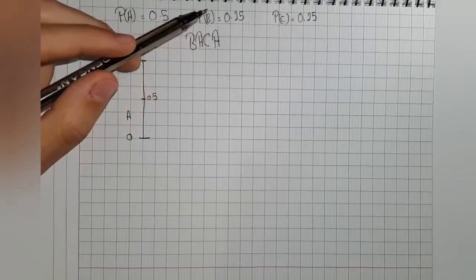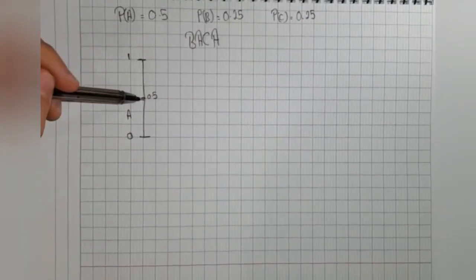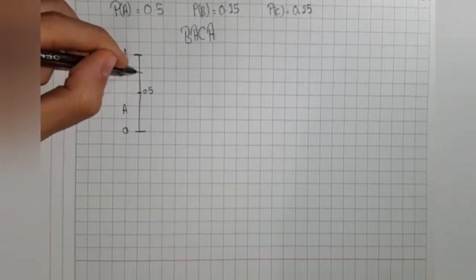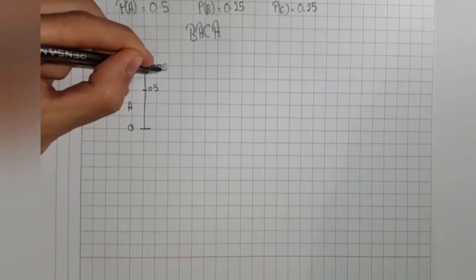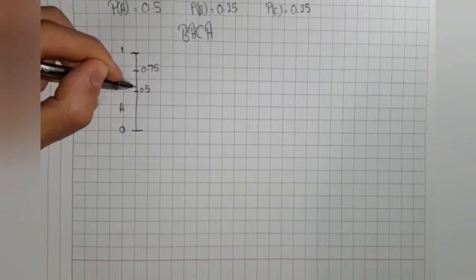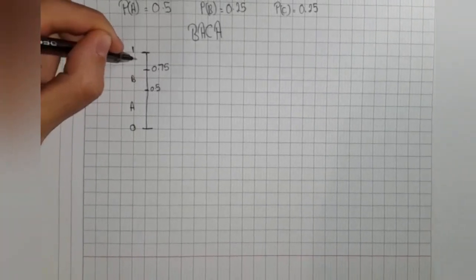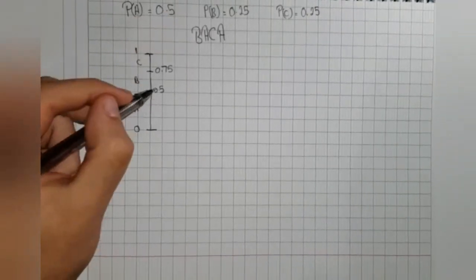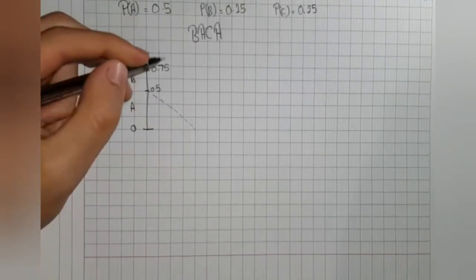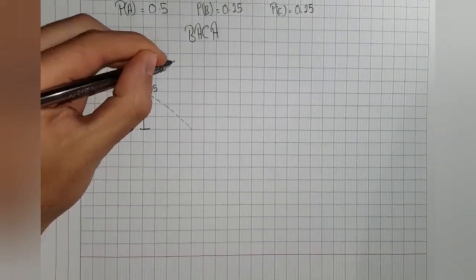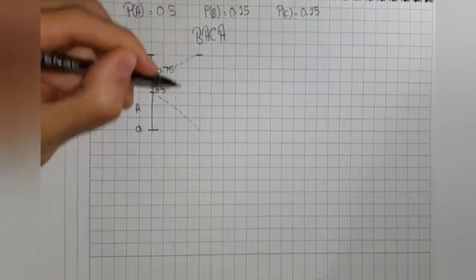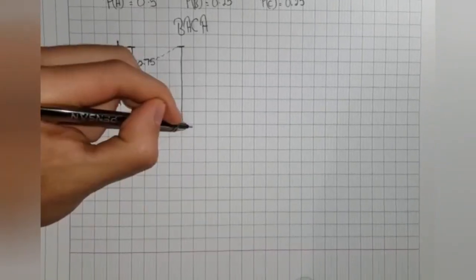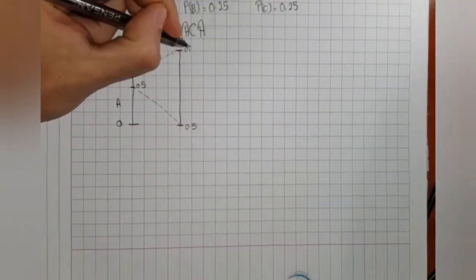pb is 0.25, so if we add 0.25 with 0.5, it will give us 0.75, and its location on the interval line is here. This is the interval where b is located and c is located here. The first symbol is b, so we should take a lower limit and an upper limit.